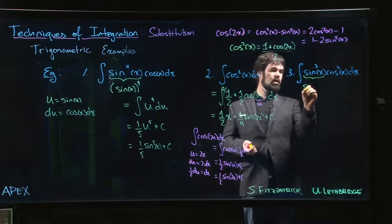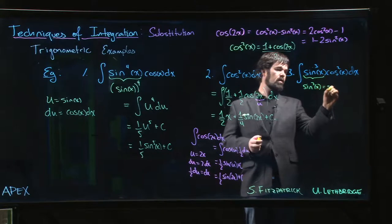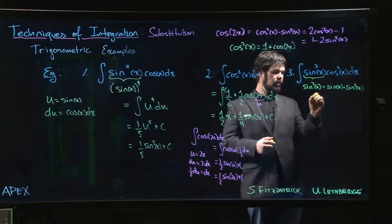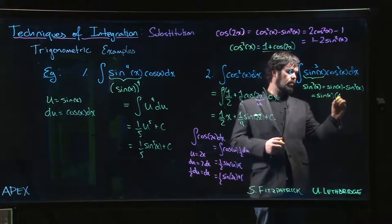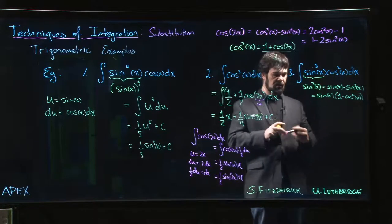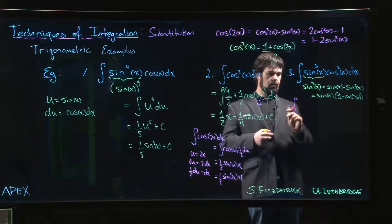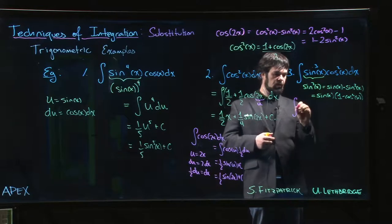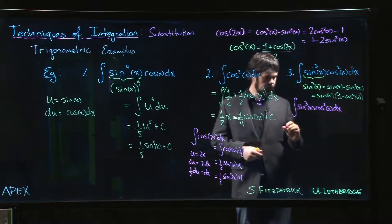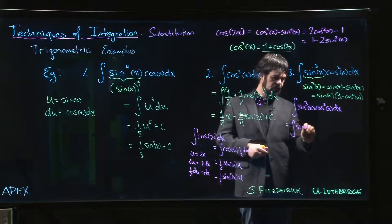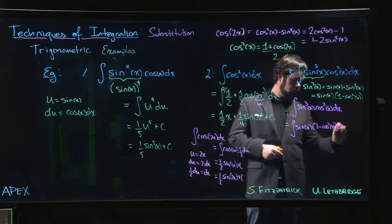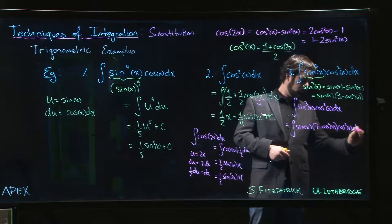But with the odd power, there's a little trick you can do. You can say, well look, sine cubed x is sine x times sine squared x, and sine squared x I can write as 1 minus cos squared x. Okay, so that means I can take this integral and I can write it as - so the integral of sine cubed x cos squared x dx equals the integral of sine x times 1 minus cos squared x times cos squared x times dx.